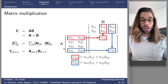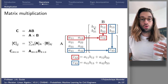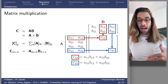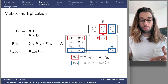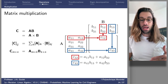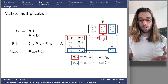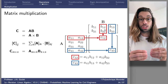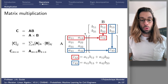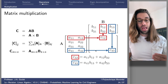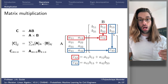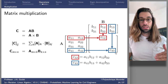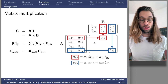Visually, to obtain element C_12, I take the first row from A and the second column from B, do an element-wise multiplication, then sum all the terms: A_11 times B_12 plus A_12 times B_22. To obtain C_43, I take the fourth row from A and the third column from B: A_41 times B_13 plus A_42 times B_23. You can do that for any element in the resulting matrix C.